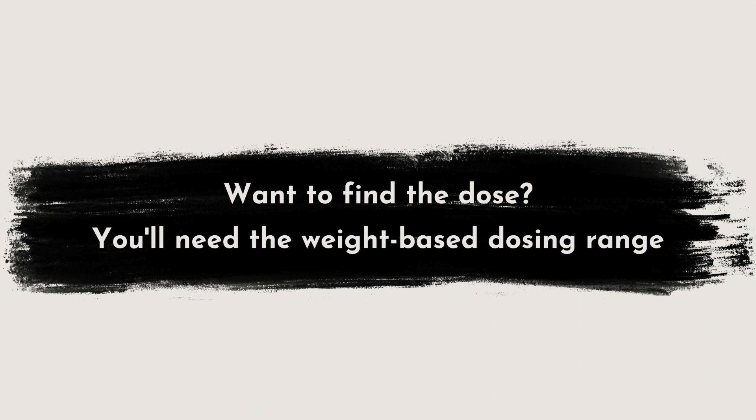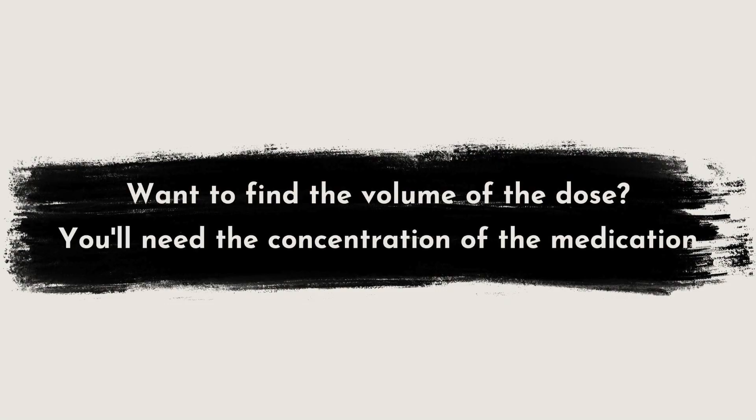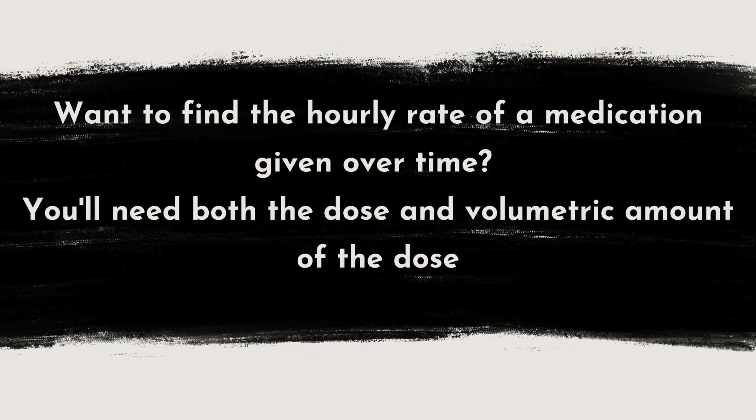Let's move into some final tips, which are really helpful if you're not sure where to start based on the information the question has given you. If your question is asking you to report the dose, you will need to know the weight-based dosing range for that medication, typically found in the orders or a reference manual. A question asking for the volume is asking for the volumetric amount of the dose, which requires knowing the concentration of the medication, found on the vial or packaging. If a question asks for the hourly rate of a medication given over a certain time, you will need both the dose and the volume.